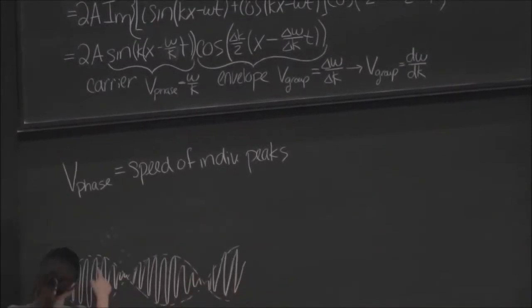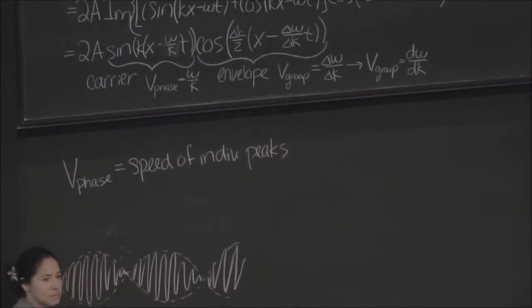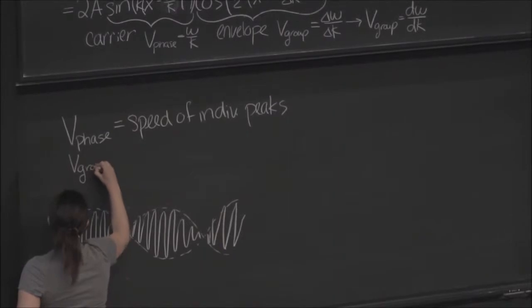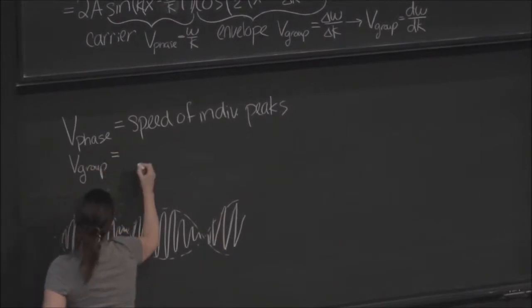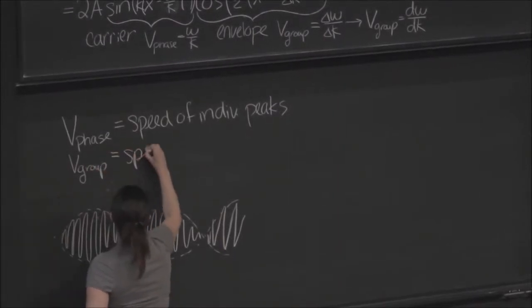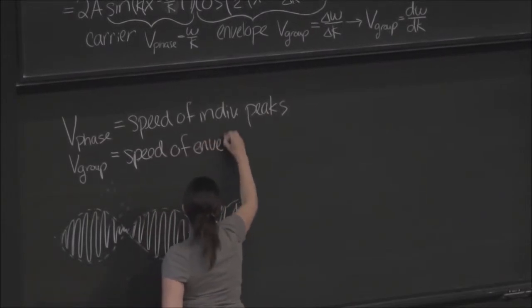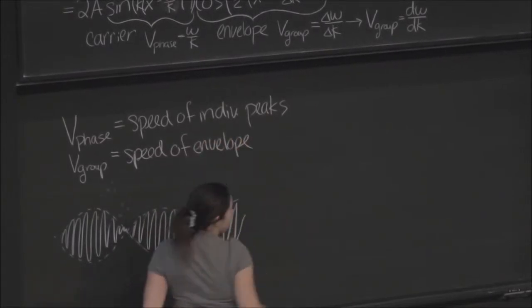OK. So that's the speed that each one of these little peaks moves at. Then we have our group velocity, which is the speed of the envelope.